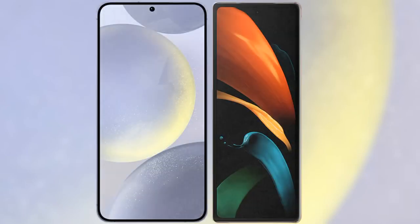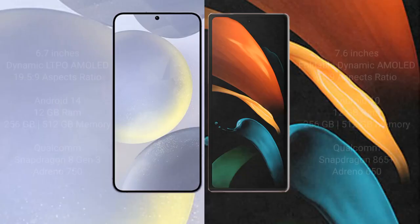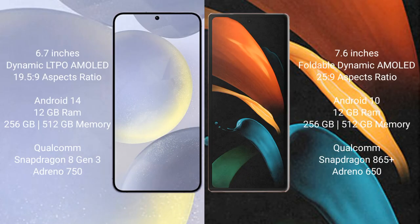I will compare the new Samsung Galaxy S24 Plus with Samsung Galaxy Z Fold 2. The Samsung Galaxy S24 Plus comes with a 6.7-inch Dynamic LTPO AMOLED display and Snapdragon processor. The Samsung Galaxy Z Fold 2 comes with a 7.6-inch Dynamic AMOLED foldable display and Snapdragon processor.